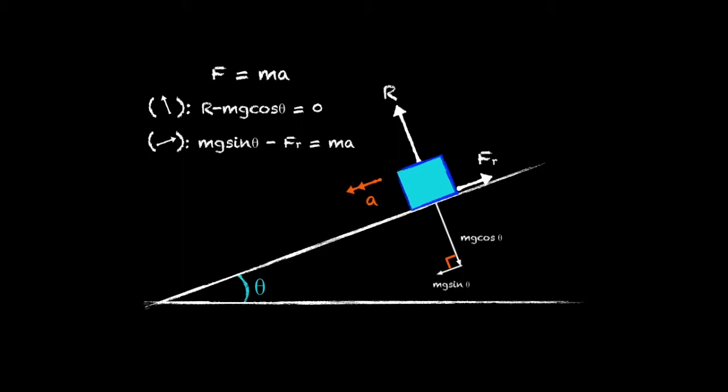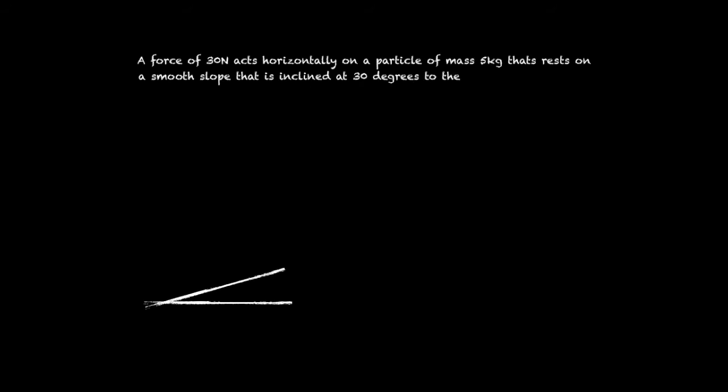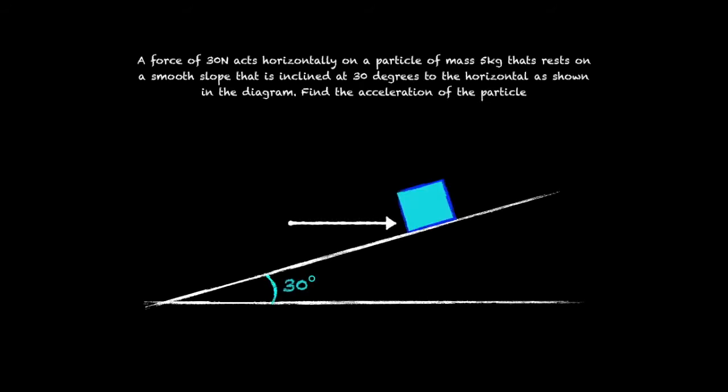So let's have a go at our first example. A force of 30 Newtons acts horizontally on a particle of mass 5 kilograms that rests on a smooth slope that is inclined at 30 degrees to the horizontal as shown in the diagram. Find the acceleration of the particle.